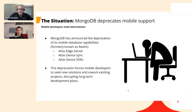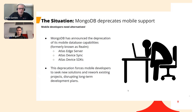MongoDB has announced the deprecation of its mobile capabilities, formerly known as Realm. The products in the stack are Atlas Edge Server, Atlas Device Sync, and Atlas Device SDKs. This deprecation is raising concerns for developers who've been relying on MongoDB's mobile tools, because now they're forced to seek new solutions, rework existing projects, and redesign longer-term development plans. We suggest moving to Couchbase Mobile — a complete end-to-end database platform with a proven track record of over 10 years of mobile support.